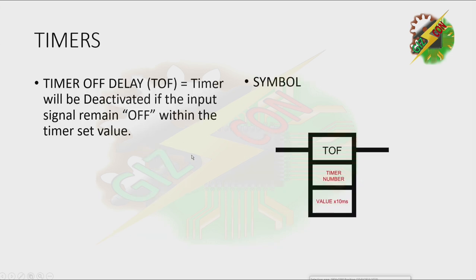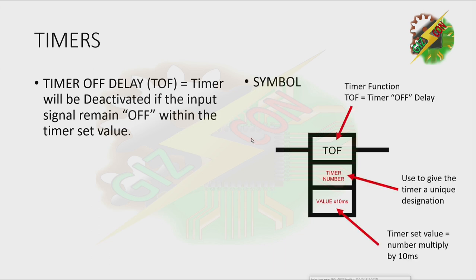Let's have timer off delay. The timer will be deactivated if the input signal remains off within the given timer set value. We have T off for timer off delay, along with the timer number and the timer set value, which is the same as our T on.